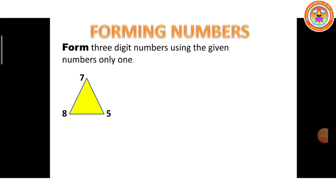Form 3-digit numbers using the given digits only once. What are the possible 3-digit numbers that can be formed using the given digits 7, 8, and 5? All the digits in each 3-digit number are different. Write them from smallest to largest — we know there are 6 answers. If we take 5 in the 100s place, we know that 7 is less than 8.